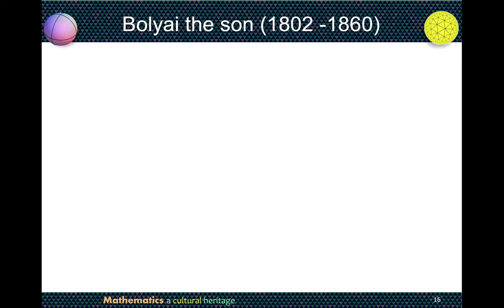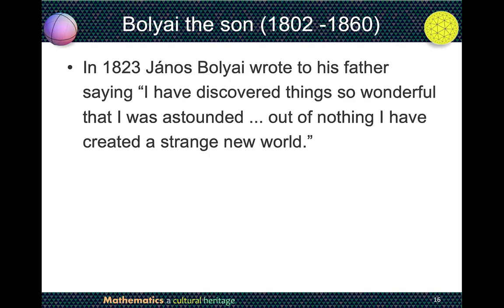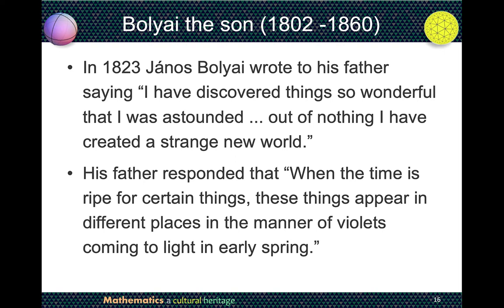Bolyai the son, like all sons who did not listen to their fathers, in 1823 wrote to his father saying: 'I have discovered things so wonderful that I was astounded. Out of nothing, I have created a strange new world.' With that, Bolyai the son had also discovered non-Euclidean geometry. Bolyai the father was so proud and happy. He responded: 'When the time is right for certain things, these things appear in different places in the manner of violets coming to light in early spring.' He worried that some other mathematician might discover the same thing, and urged his son to publish the result as soon as possible.